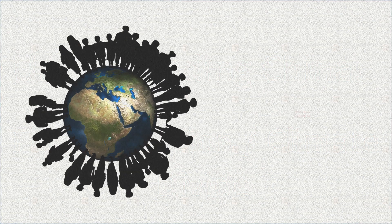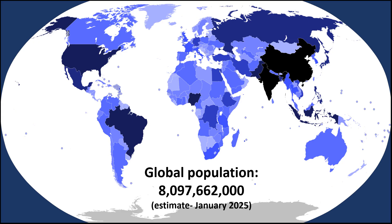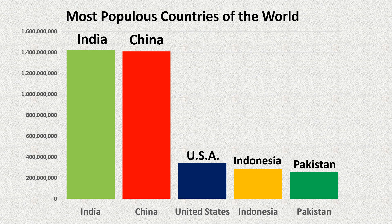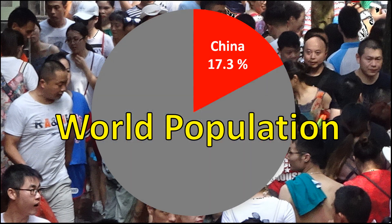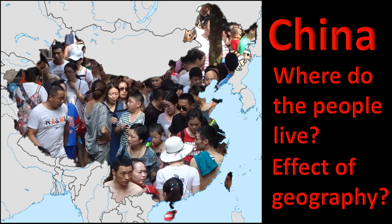The earth is home to more than 8 billion people. But for a variety of reasons, the world's inhabitants are not evenly distributed around the globe. China is the second most populous country in the world, making up more than 17% of the global population. But where in China do all these people live, and how does geography affect this?